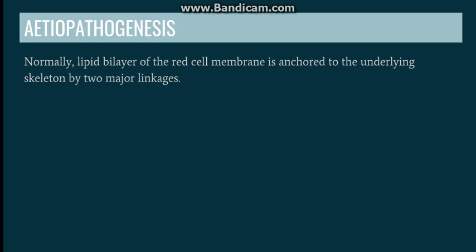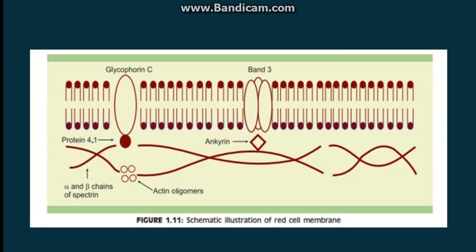The normal red cell membrane is anchored to the underlying skeleton. Here we can see the normal red cell membrane: this is the lipid bilayer and this is the red cell cytoskeleton. The alpha and beta chains of spectrin, which are part of the cytoskeleton, are joined by ankyrin protein to band 3, which is present in the lipid bilayer. This is the first linkage. The second linkage is by protein 4.1, which joins spectrin to glycophorin C.